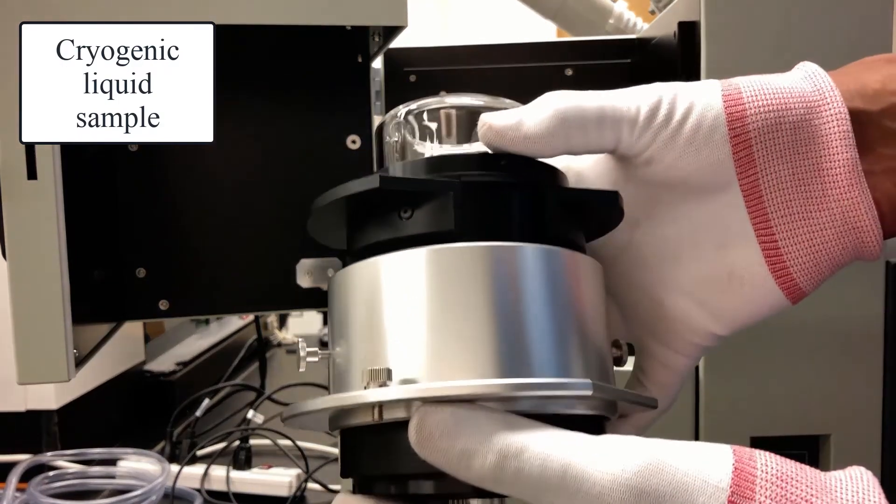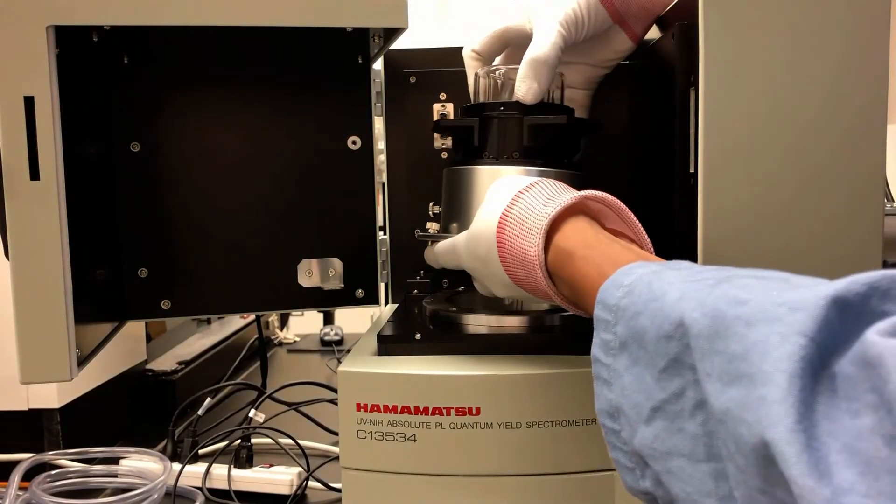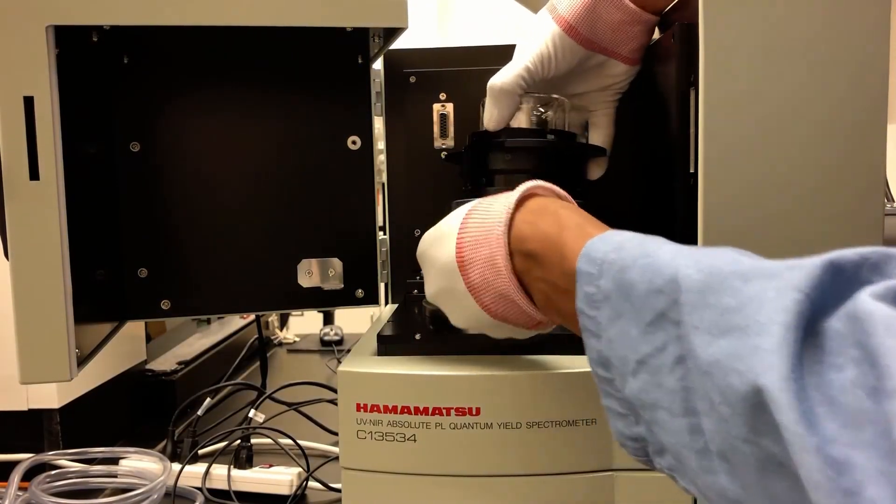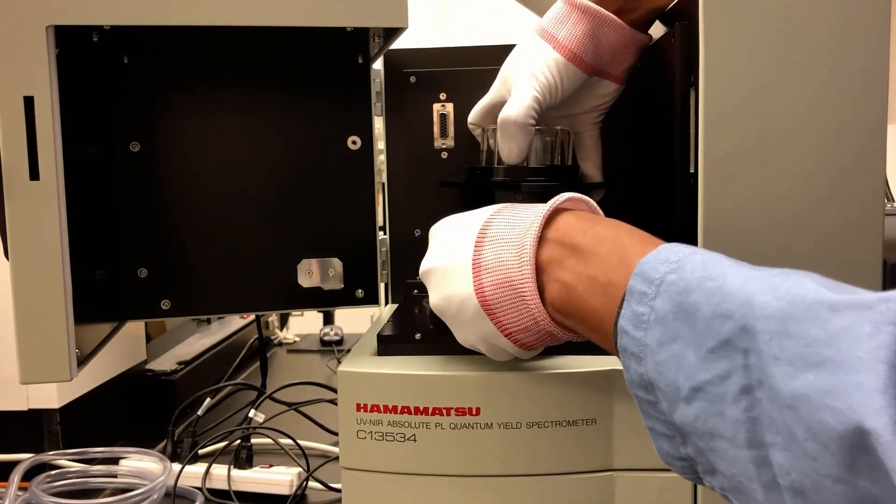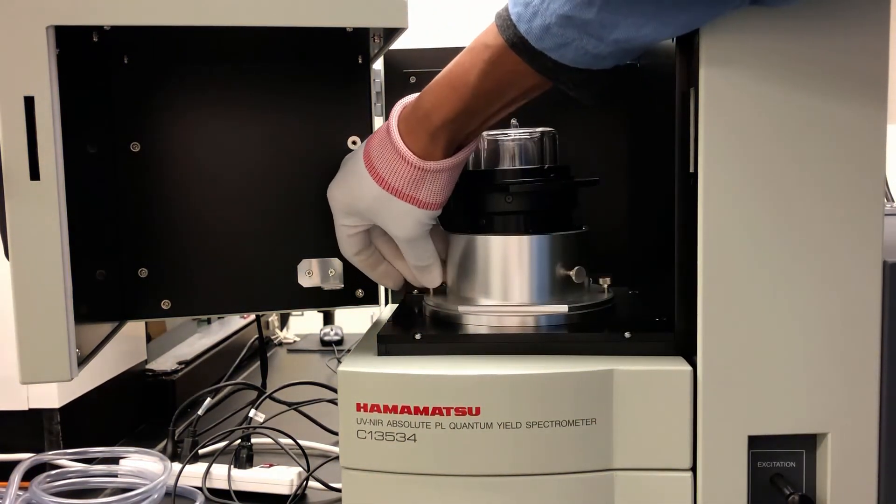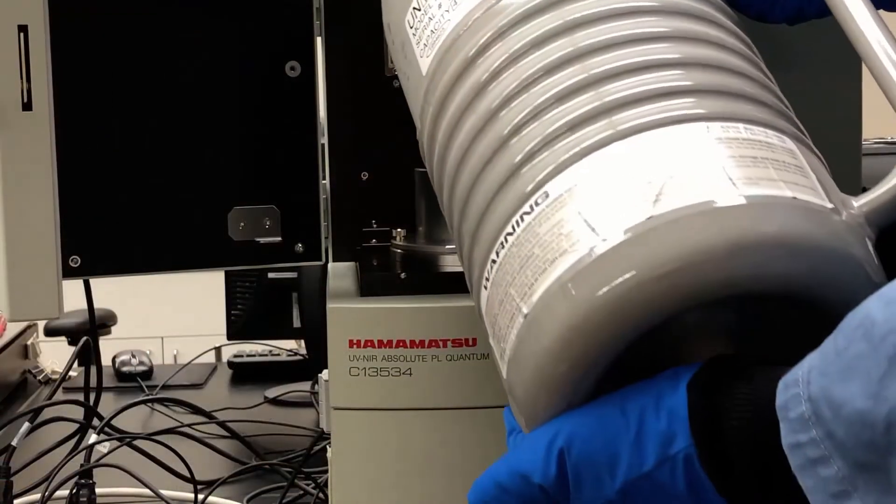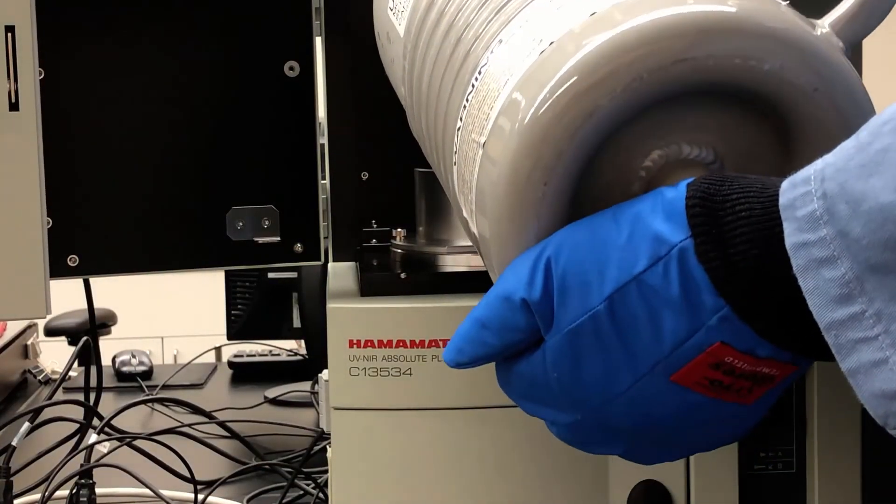Our final sample is a cryogenic liquid sample. You'll need this Dewar flask holder, which you'll find near the spectrometer. Let's set it up in chamber A and tighten the screws to hold it in place. If you're trained to use liquid nitrogen, you can fill up the Dewar.